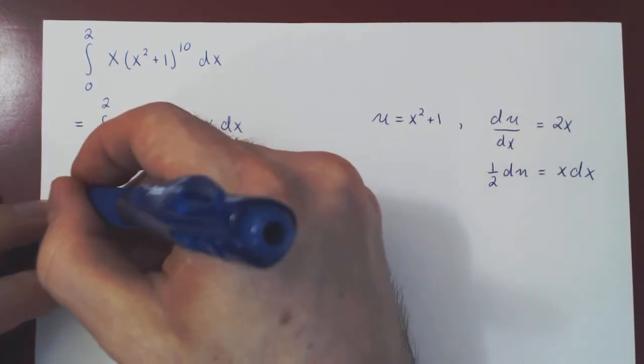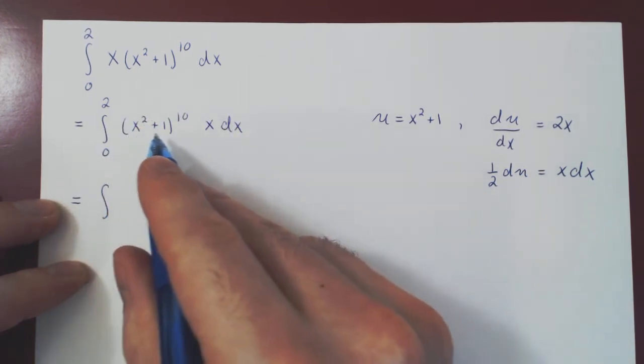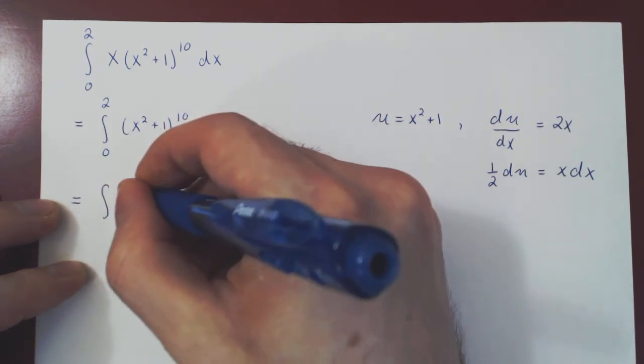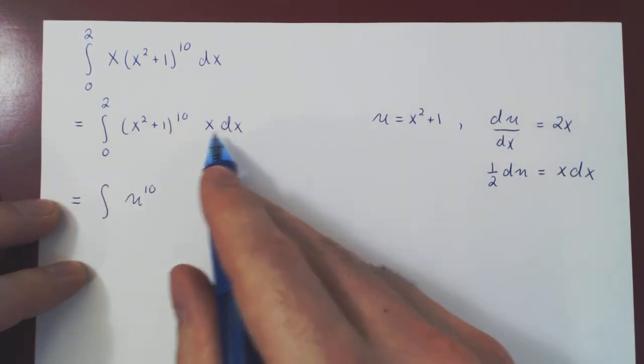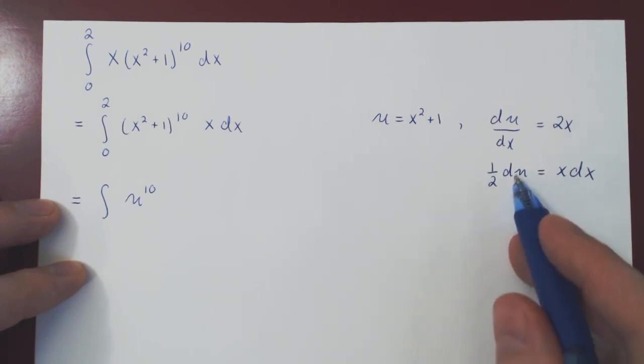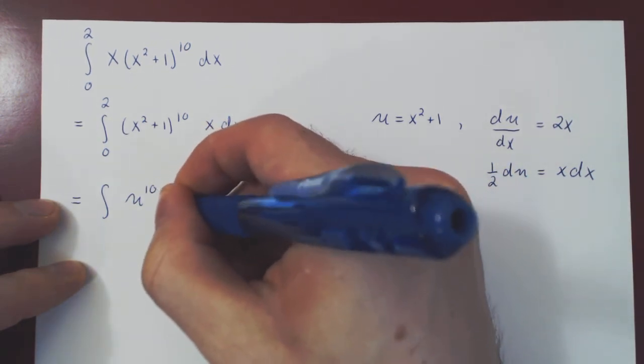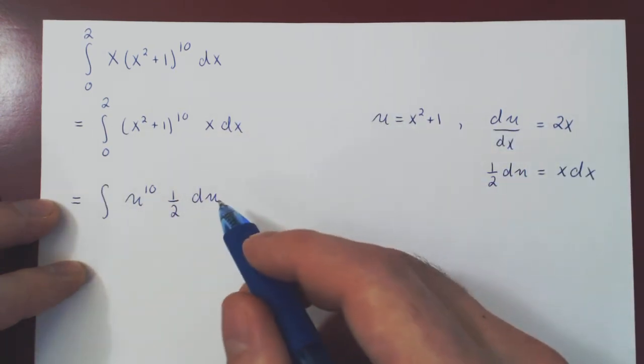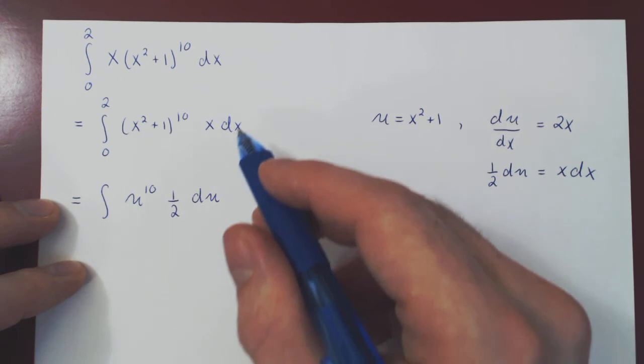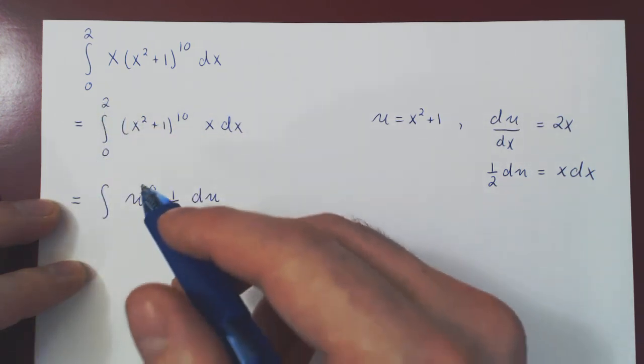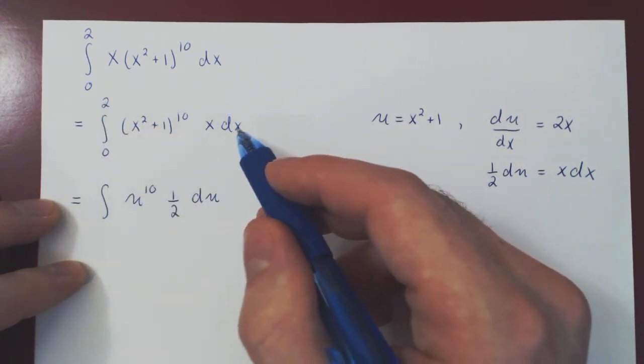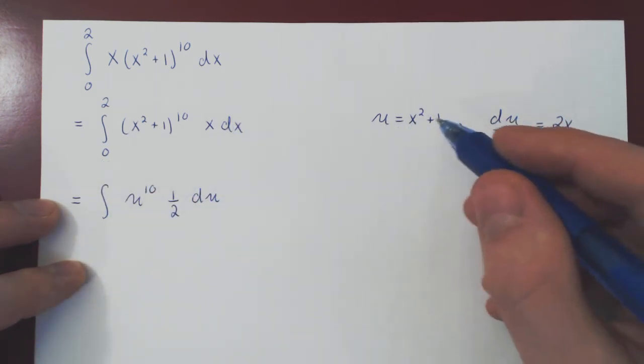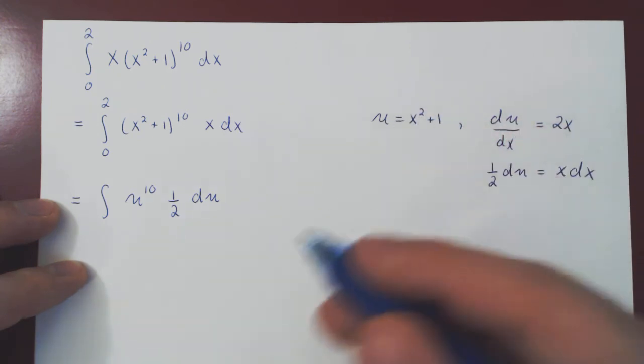And you get that 1 half of du is x times dx. So first, we replace the integrand. x squared plus 1 is u, that's u to the 10. x dx is just 1 half du. But now remember, the new bounds must be a function of u, and the old bounds were functions of x. So if x is 0, what is u equal to? If x is 0, this goes away, and u now is simply 1.